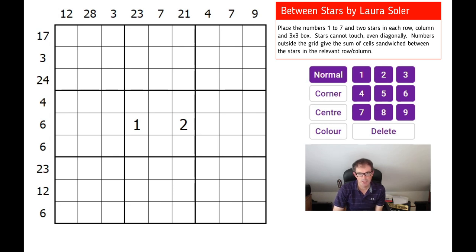But let me talk to you about how this puzzle works. So the idea is that we need to place the numbers from one to seven and two stars in each row, column and three by three box, such that the stars don't touch each other, even diagonally, with the numbers outside the grid telling us the sum of the cells sandwiched between the stars in the relevant row and column. So that is our challenge. If you want to take the challenge before you watch me try the challenge, then do click on the link under the video. That will take you to our software and you can have a go at the puzzle, just as I'm going to do now. So, without further ado, let's go.